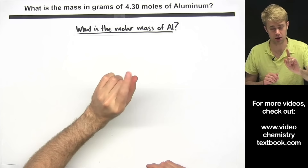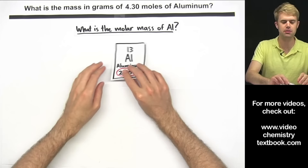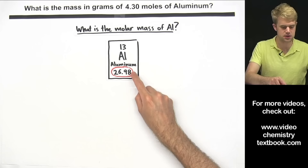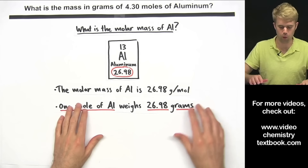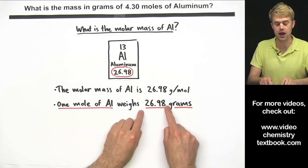To figure this out, we look up aluminum on the periodic table and check out this number here. This number tells us that the molar mass of aluminum is 26.98 grams per mole, which means that one mole of aluminum weighs 26.98 grams.